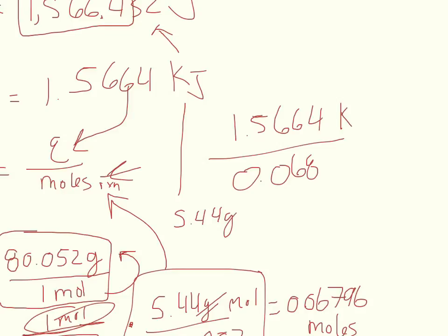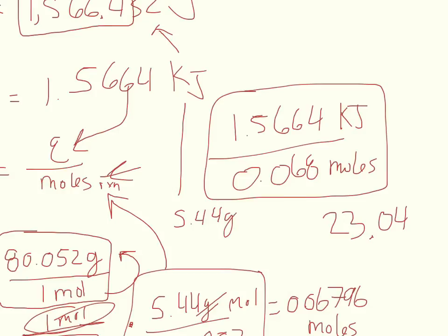So I'll have 1.5664 divided by 0.068. The units here are kilojoules, and the units here are moles. And so my final unit for change of enthalpy will be kilojoules per mole. And the answer to that will be approximately 23.04. So 23.04 kilojoules per mole. And that's the final answer.